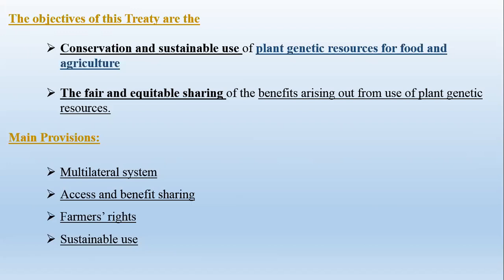The fourth provision is Sustainable Use. Most of the world's food comes from a few main crops, but many other crops such as millets also exist, which have high nutritional values and need to be consumed in small quantities. The treaty aims to increase the use of these minor or nutritional crops in addition to the main crops. This represents sustainable use, broadening the range of crops utilized to support food security and nutrition.